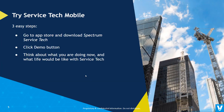If you don't currently have Service Tech Mobile and would like to try it out, it's really simple. Get your phone out, go to the App Store — the Apple App Store or the Google Play Store. Search on Spectrum Service Tech, download it, and then you'll see a demo button when you fire it up. Click the demo button and you'll get into the same database I just showed you where you can go ahead and start playing around.